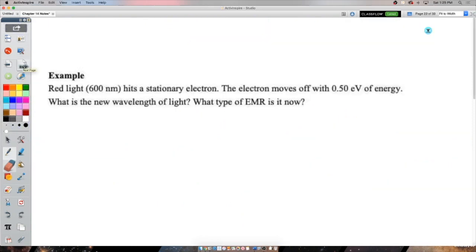Red light hits a stationary electron. The electron moves off with 0.5 electron volts of energy. Let's just go ahead and turn that into joules. So that is just by the fact that half of an electron volt is half of 1.6 times 10 to the negative 19. What is the new wavelength of light, and what type of EMR is it now?